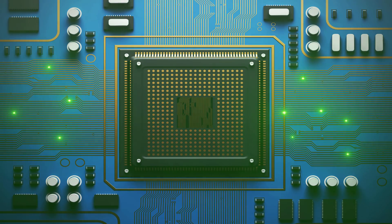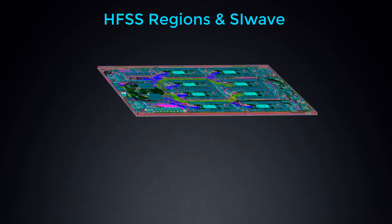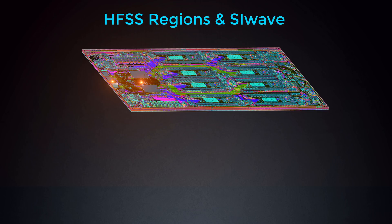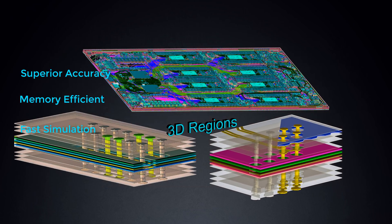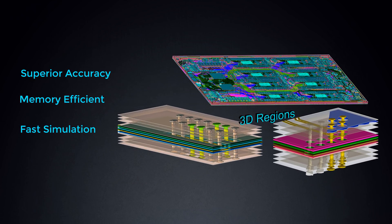When designing high-speed data channels, it's crucial to simulate accurately and find signal integrity problems prior to fabrication. To do this, use HFSS Regions in SI-Wave, a fast and memory-efficient solution in ANSYS SI-Wave that delivers superior accuracy for critical nets with 3D discontinuities.